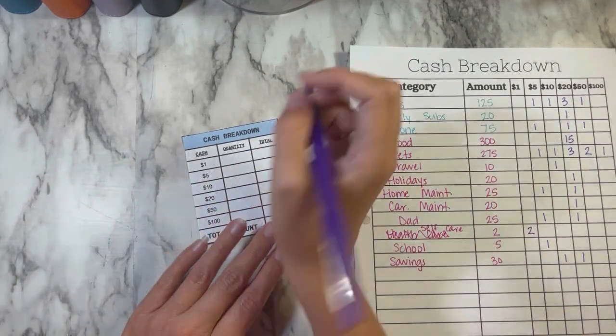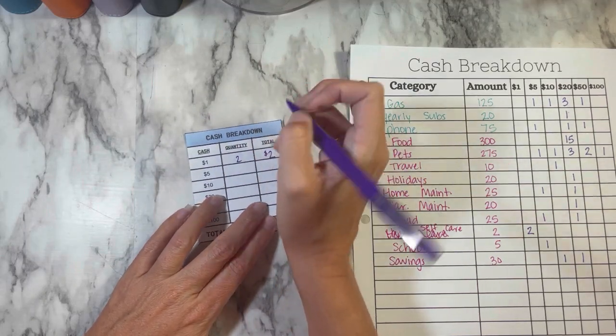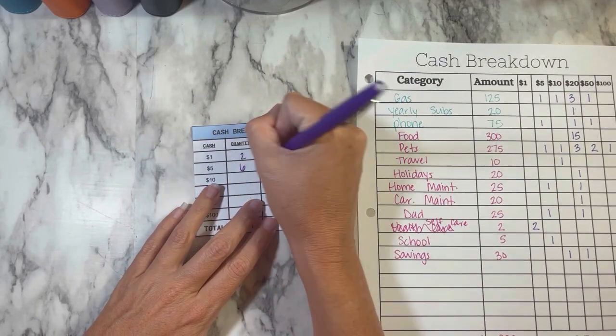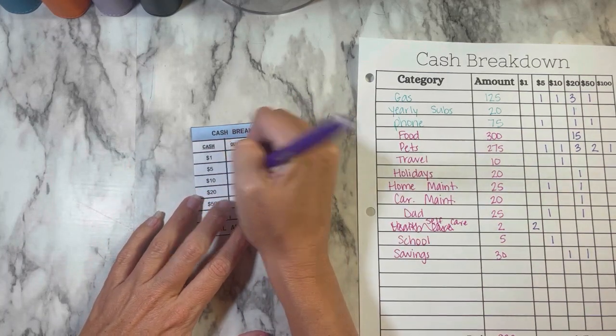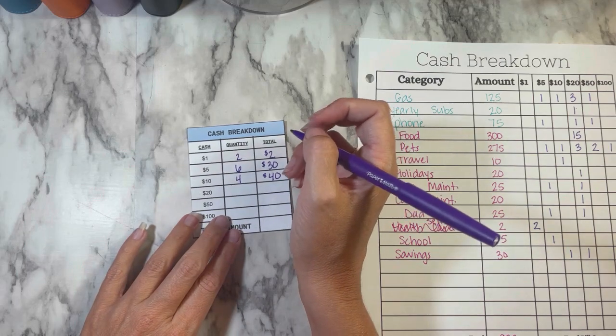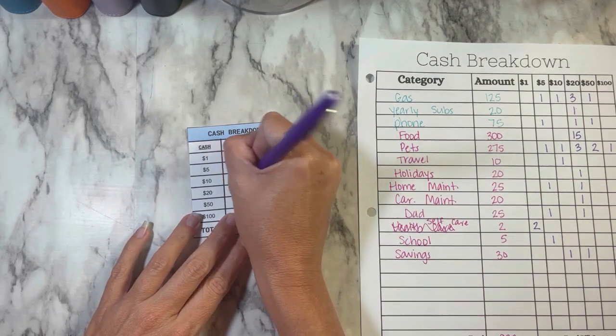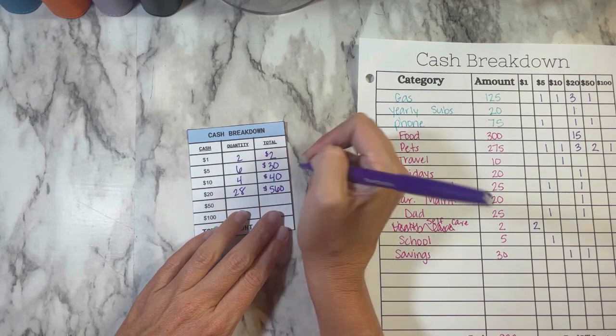I don't have to sit there and explain how much of each bill I want. They can just look at this. Makes it really quick and super easy. So we have two $1s, we have six $5s, four $10s, we have twenty-eight $20s.